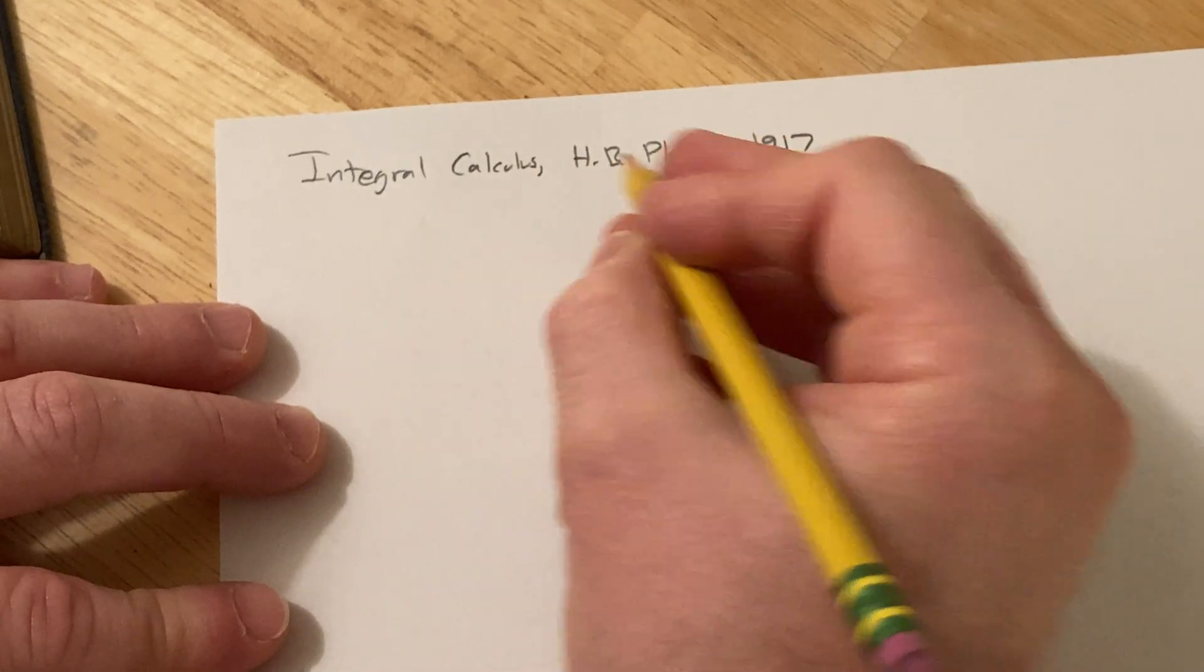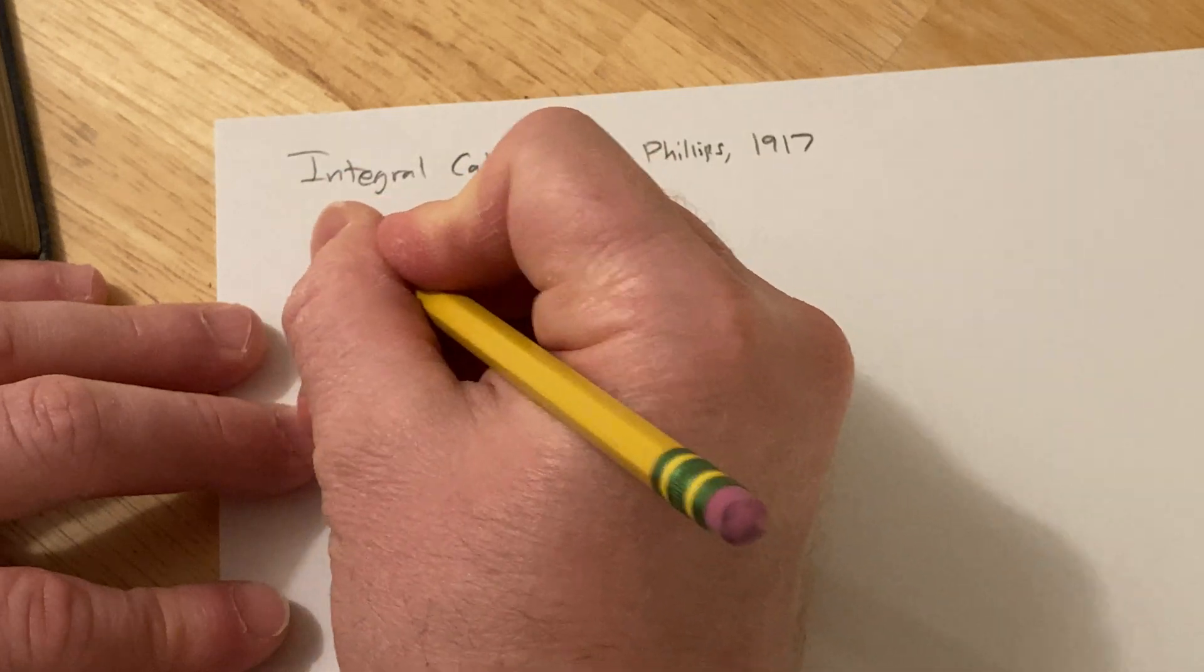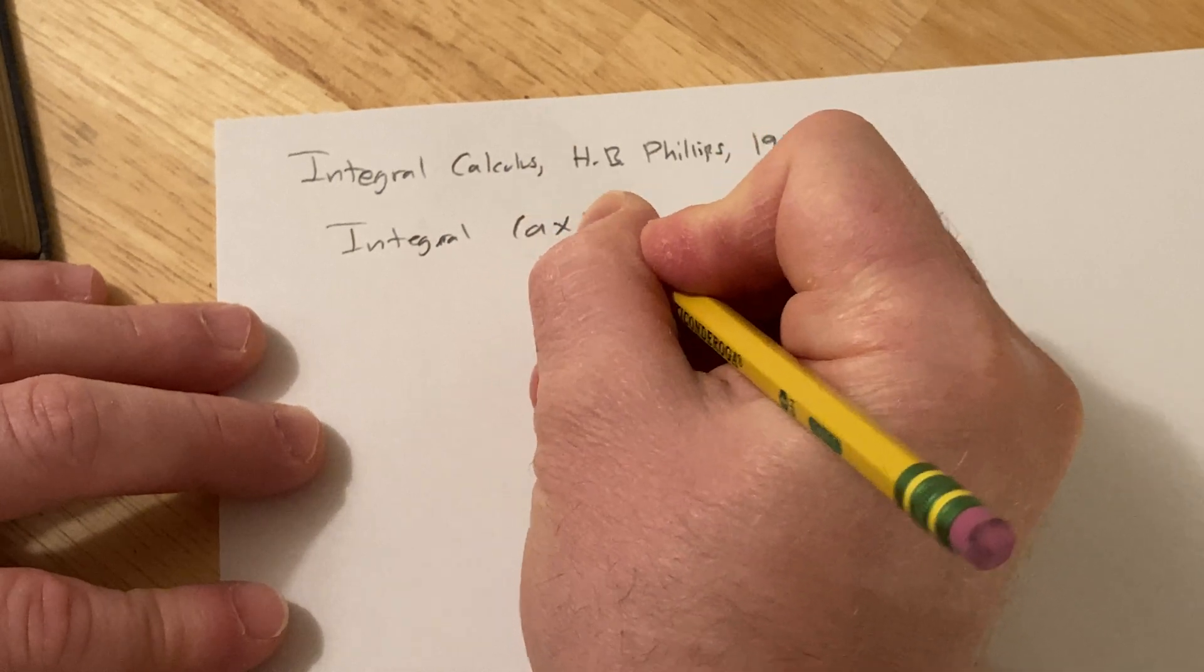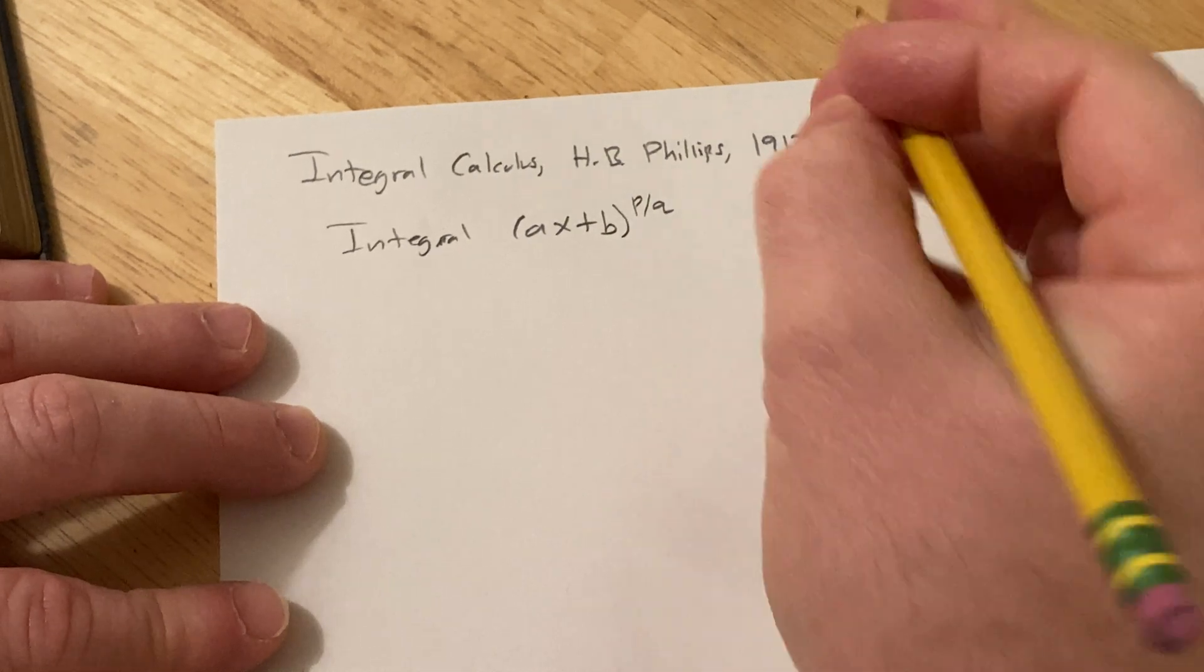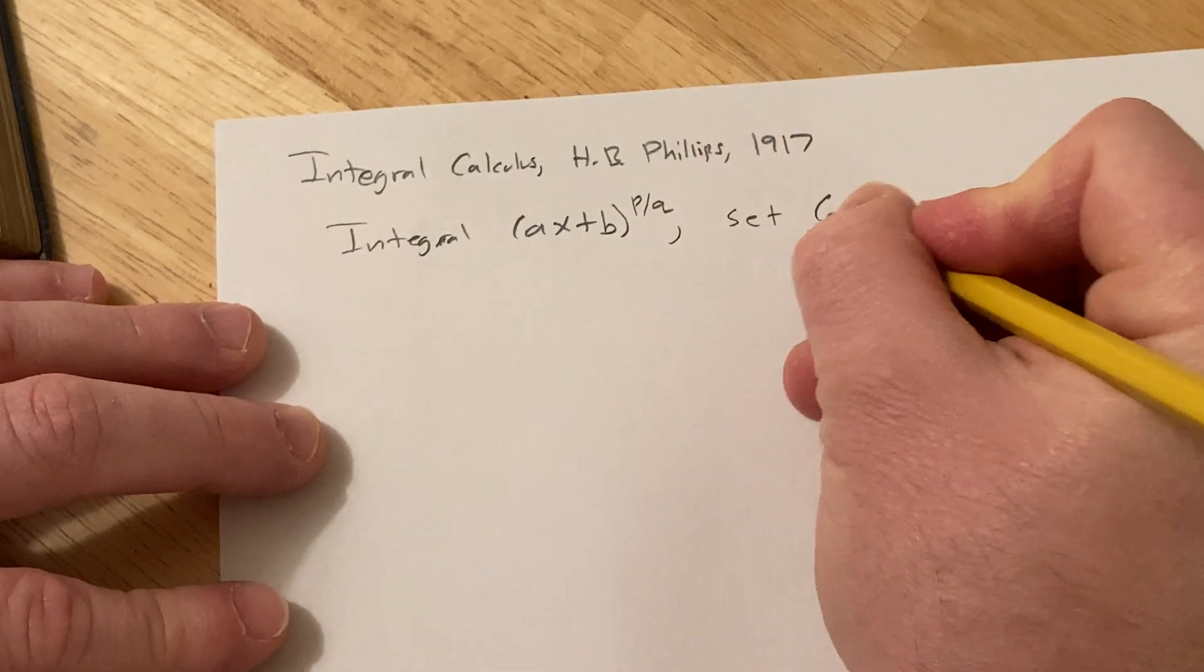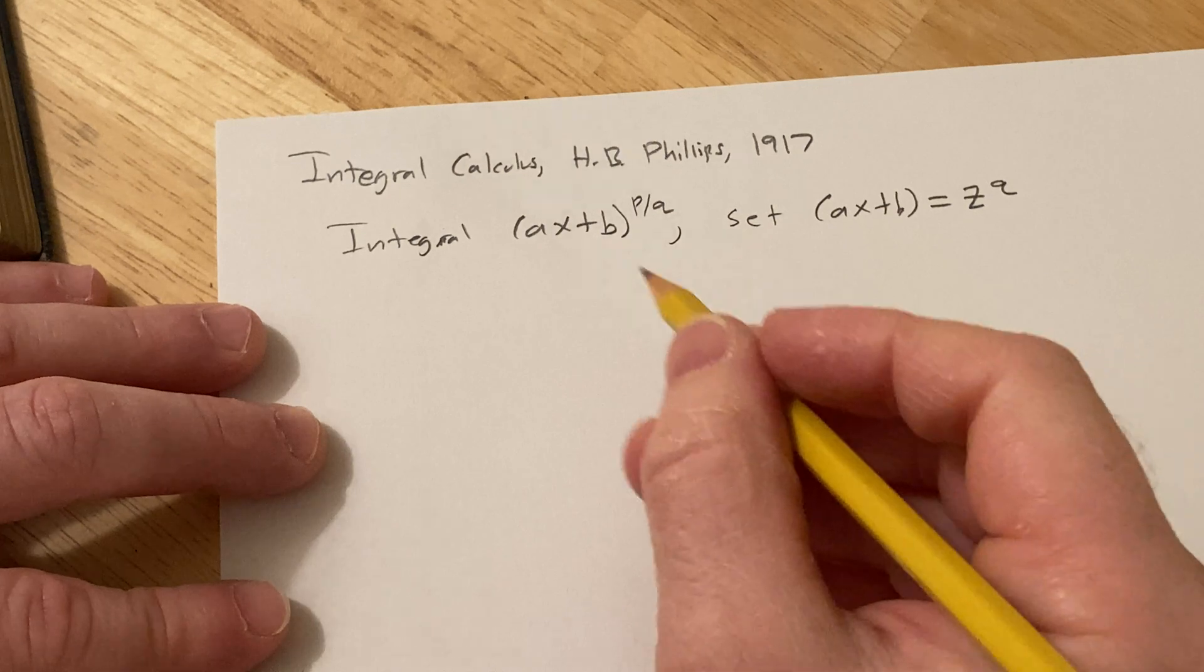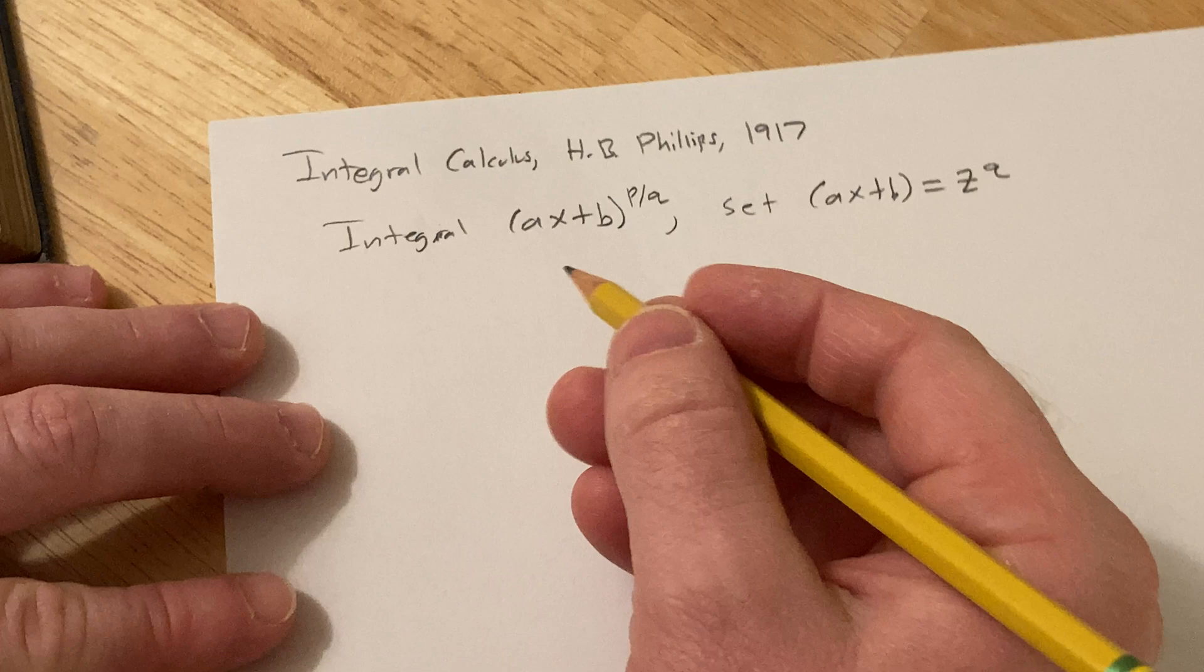He was an assistant professor at MIT. The idea is if you have an integral containing the form AX plus B to the P over Q, you can make a substitution by setting AX plus B equal to Z to the Q, and that's going to cause a cancellation. I think the best way to show you this is with some examples.